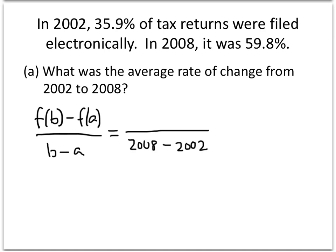F(2008) is what percent of tax returns were filed electronically in 2008. Reading from the problem, it's 59.8%, minus F(A), which is 35.9% — that's how many tax returns were filed electronically in 2002. So we end up with 59.8 minus 35.9 divided by 2008 minus 2002. The top works out to 23.9, and the bottom is 6. Dividing 23.9 by 6 gives approximately 3.98.